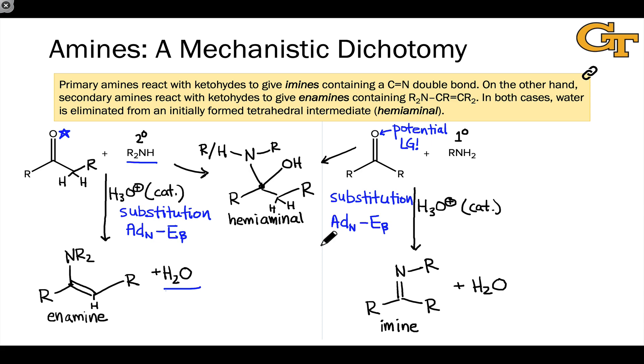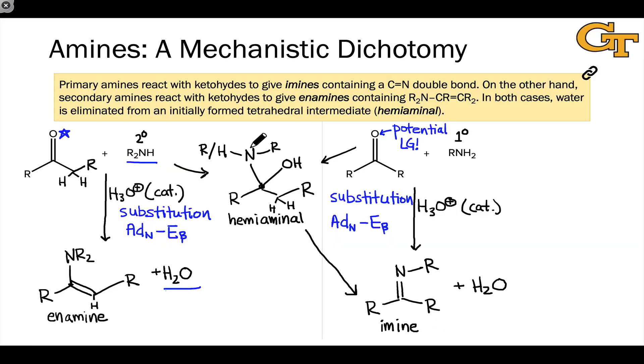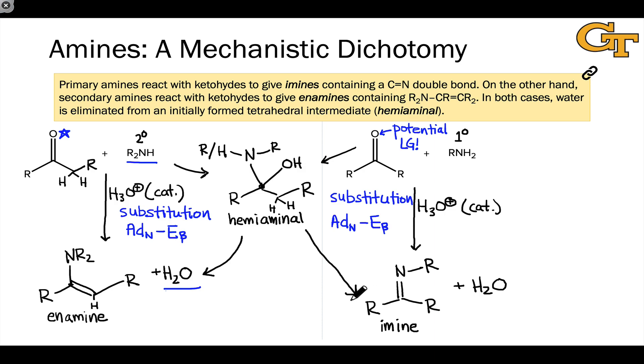Further reactivity of the hemiaminol gives rise to either the imine or the enamine. If we have a hydrogen on the nitrogen, that will be eliminated along with OH. That's the elimination of water to give the imine. But if there's no H linked to the nitrogen, elimination of water involving a hydrogen linked to that nitrogen is obviously not possible. So instead, we eliminate from the alpha carbon and that gives rise to the enamine. We'll look at these mechanisms in detail. I just wanted to present the general picture here first.